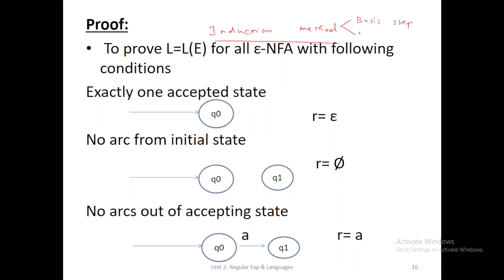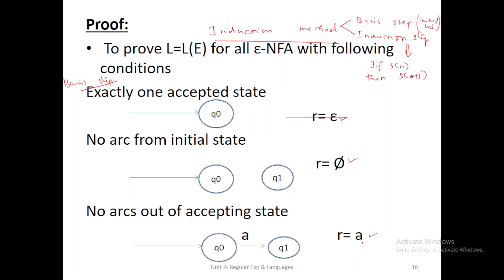The first step is the basis step, and the next step is called the induction step. Basis step contains only the initial value. If you prove the initial value, you solve it as a basis step. The induction step is solved as: if S(n), then S(n+1). So, the basis step here means we should draw epsilon-NFA. Epsilon-NFA contains a set of states.